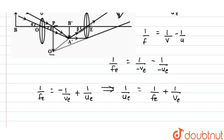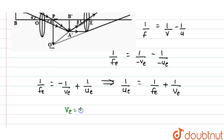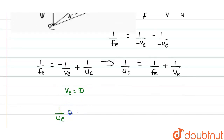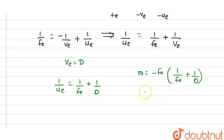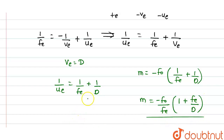Since the image formed by the eyepiece is at the least distance of distinct vision, ve = D. Therefore, 1/ue = 1/fe + 1/D. Substituting into the magnification formula: M = −fo × (1/fe + 1/D). Taking 1/fe as a common factor: M = −(fo/fe)(1 + fe/D). This is the formula for magnifying power when the image is formed at the least distance of distinct vision.